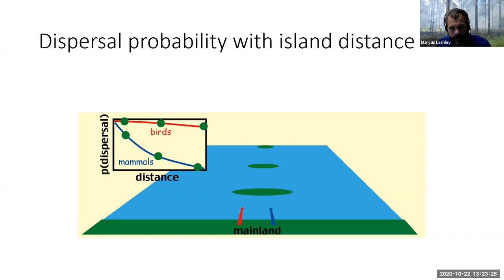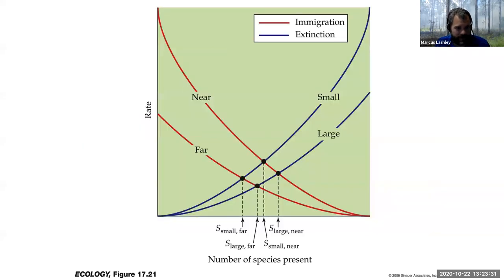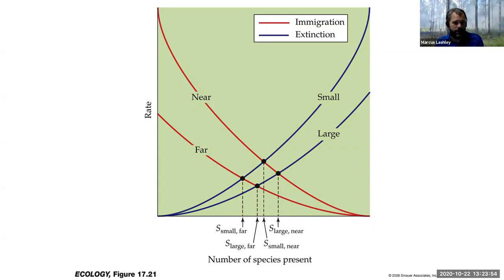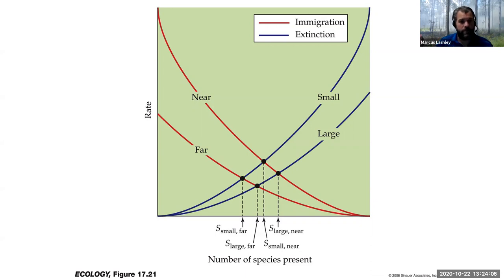When we put all of these things together we get the ultimate prediction: near small islands, far small islands, and far large islands. Notice that a far large island tends to have a few fewer species than a near small island, which tells you that distance is having a bigger impact on this relationship than the size of the island — though both are affecting what's going on.